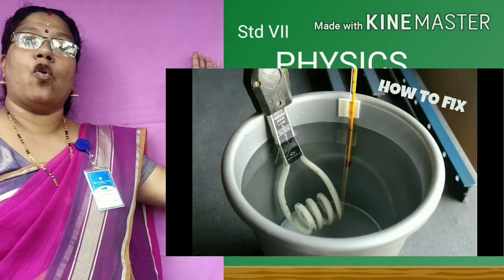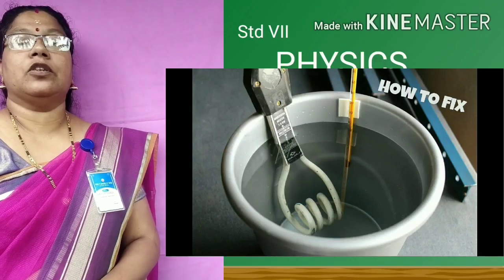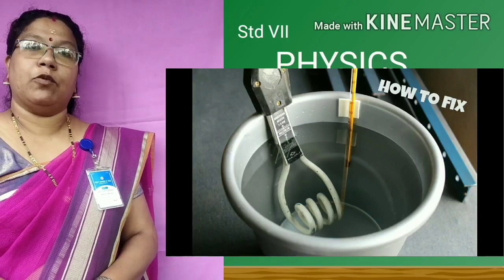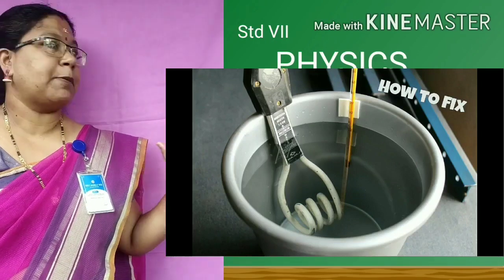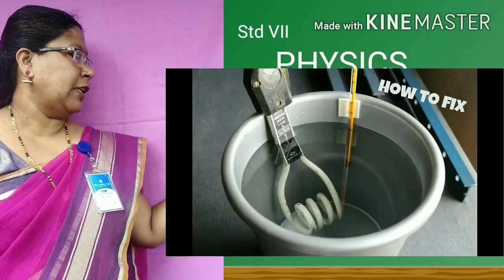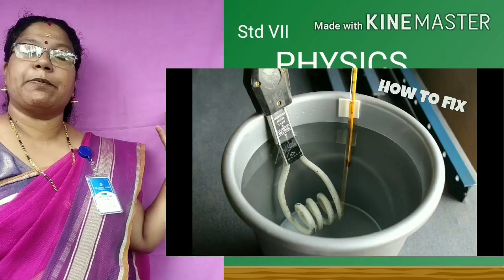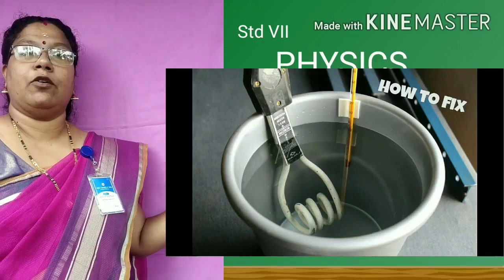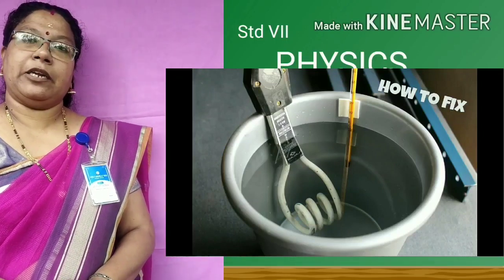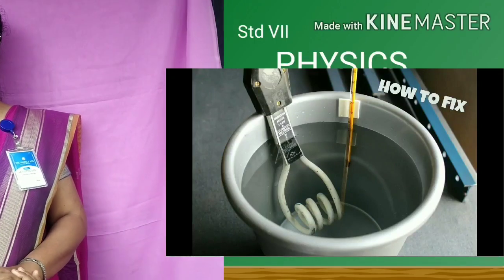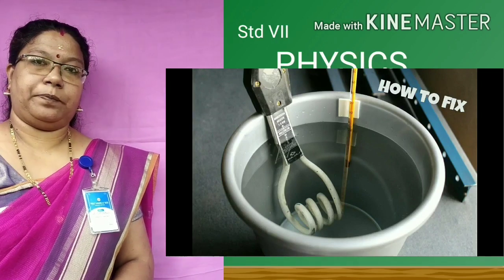The cold water from the top moves downwards near the coil, and that cool water also becomes hot. The hot water moves upwards and the cool water moves downwards. This process continues until the water reaches our required temperature. Then we switch off the immersion rod and thus the water becomes hot.